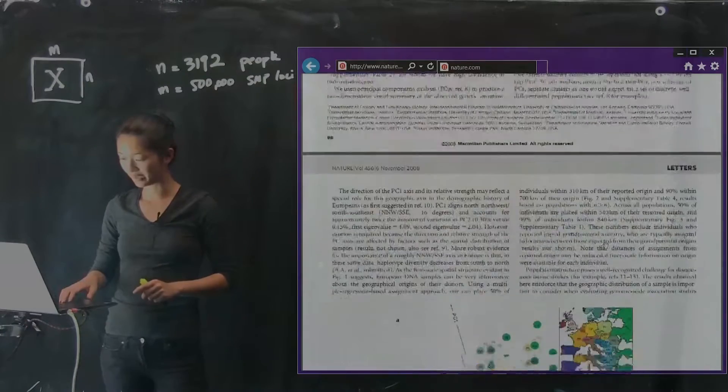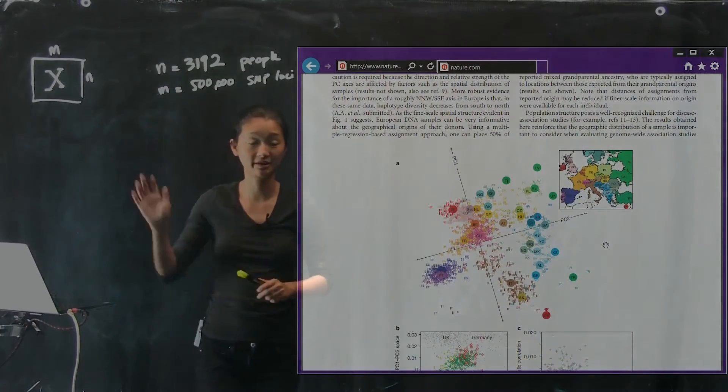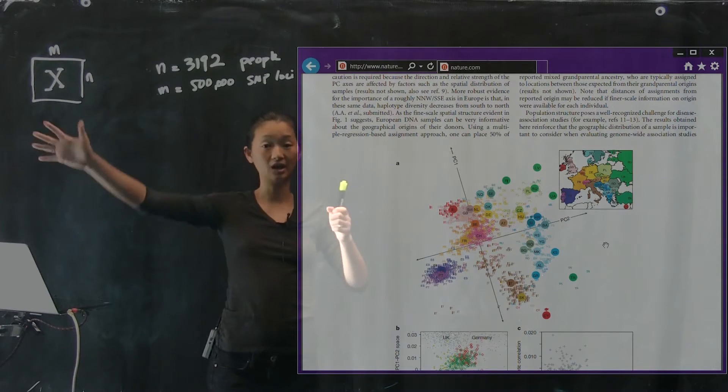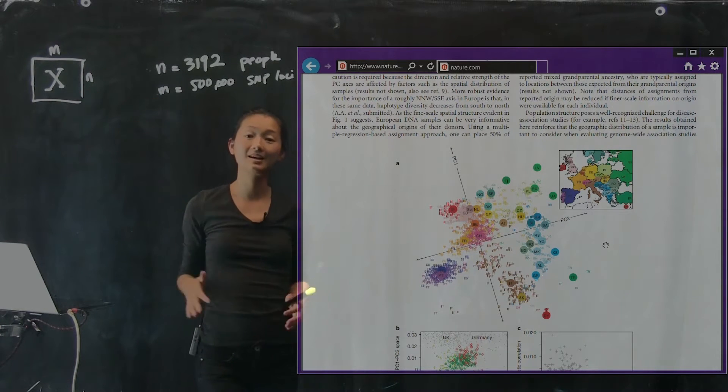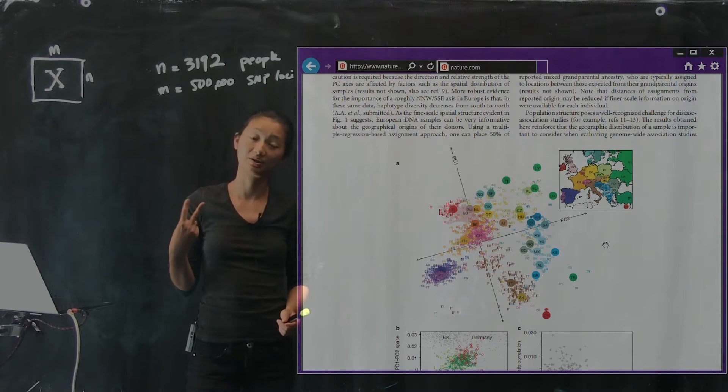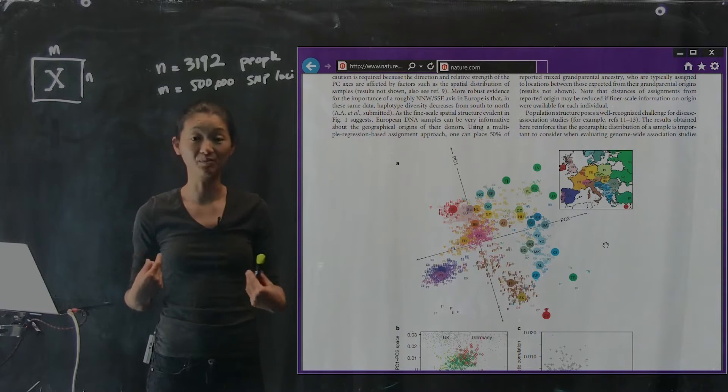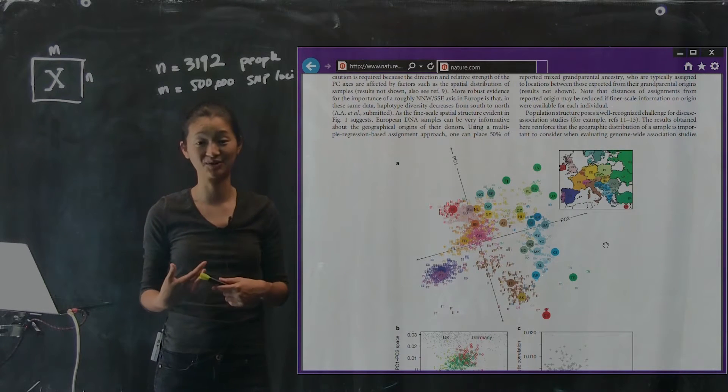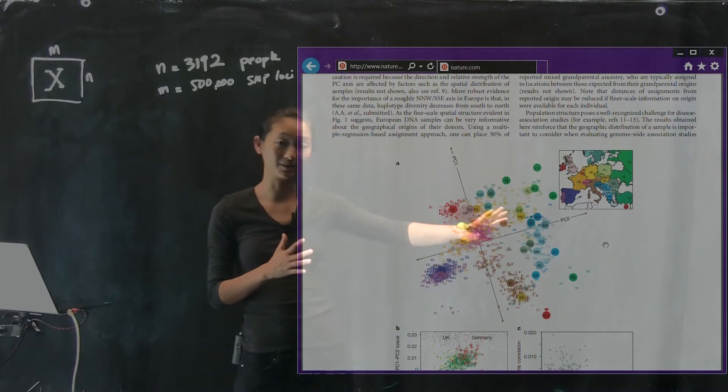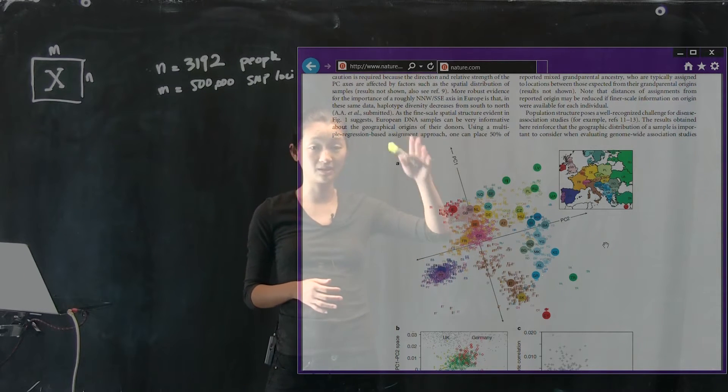And without going into the details of exactly what they did, they computed the Principal Components Analysis of this data set, projected all of these data points instead of in 500,000 dimensions, projected in just two dimensions. This is why you sometimes hear about PCA being referred to as a dimensionality reduction technique, which is really nice for both understanding data and visualizing data.